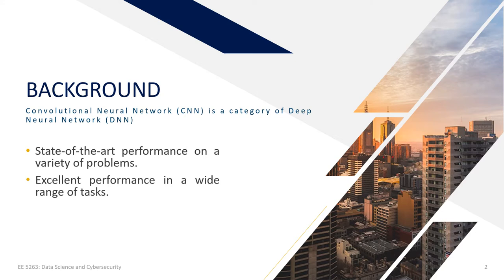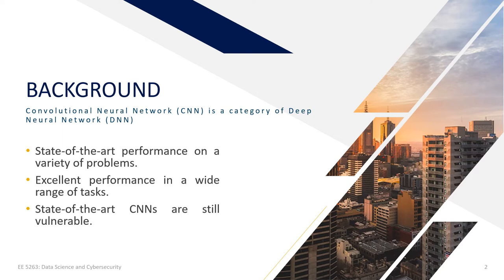In recent years, researchers have been exploring some intriguing properties of deep neural networks — more specifically, investigating why someone can cause the network to misclassify an image by applying a certain imperceptible perturbation. In general, state-of-the-art CNNs are still vulnerable, and this weakness indicates that CNNs do not need to operate strictly in the problem domain. So, what's the purpose of this paper?